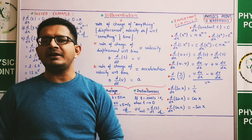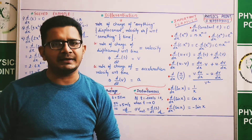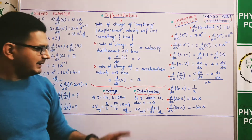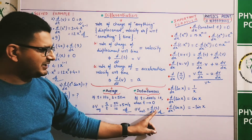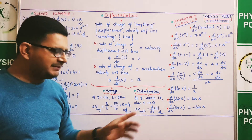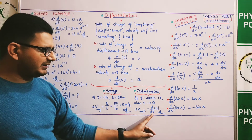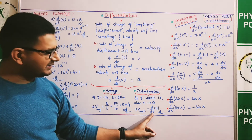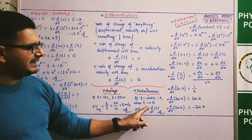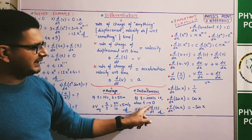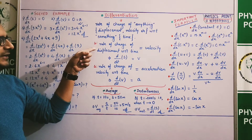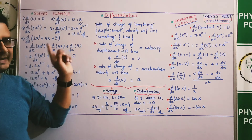If we define the rate of change of displacement, we will use the same notation. जो define करना है वो लिखेंगे नीचे और जो change हो रहा है वो लिखेंगे ऊपर। तो इसको हम पढ़ सकते हैं d by dt of s, या simply ds by dt। इसका overall मतलब होगा rate of change of displacement with respect to time.